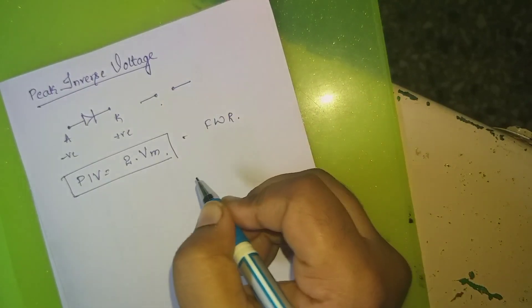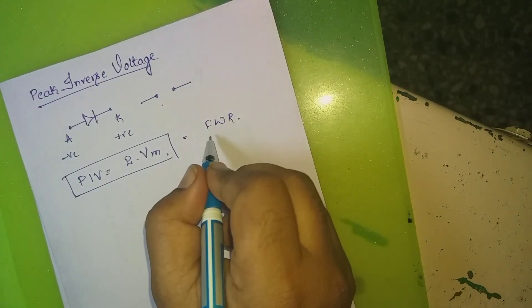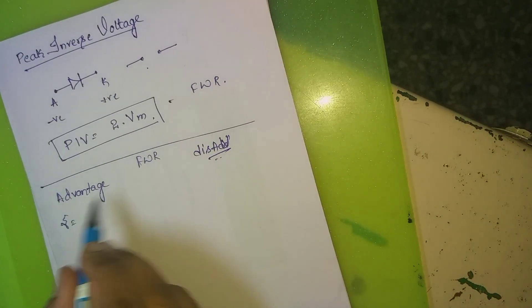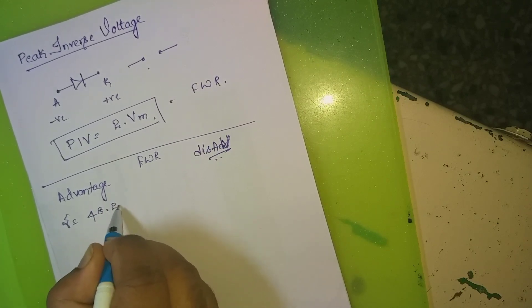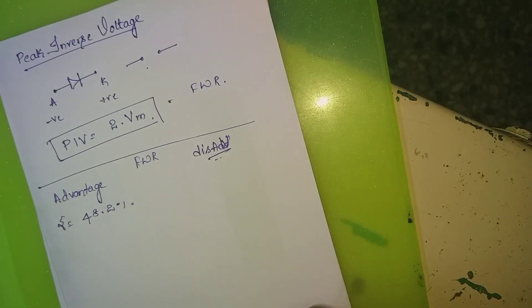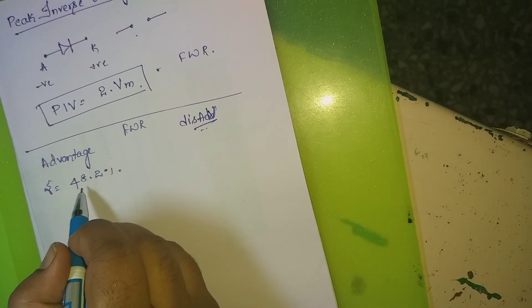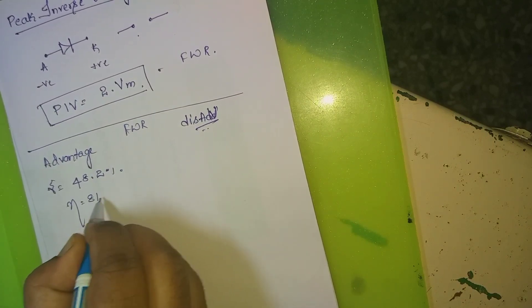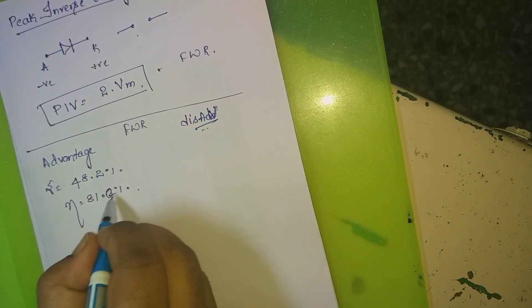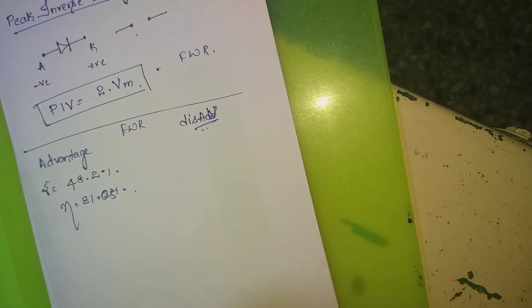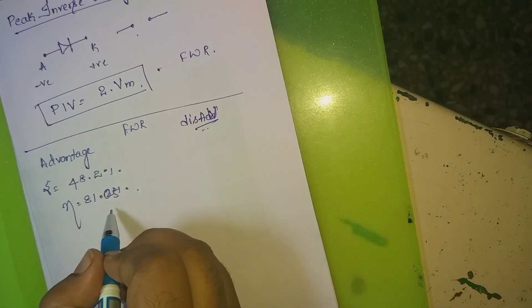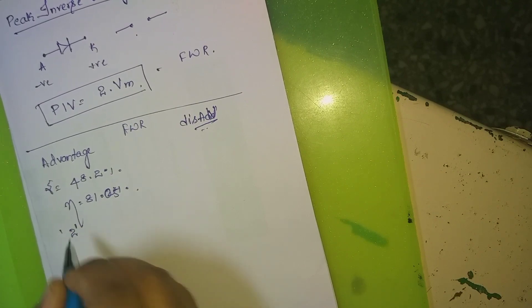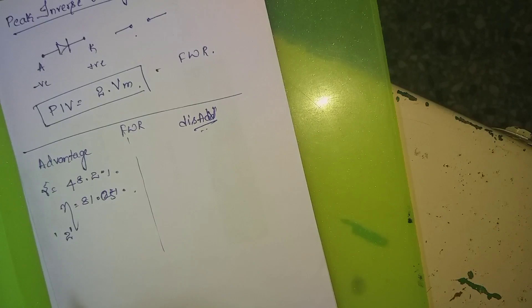For a half wave rectifier the PIV is just Vm, whereas for a full wave rectifier it is 2Vm. Moving to the advantages and disadvantages of the full wave rectifier: the ripple factor is 48.2%, which is considerably lower than the 121% of the half wave rectifier. Efficiency is 81%, which is higher, and it requires only two diodes.